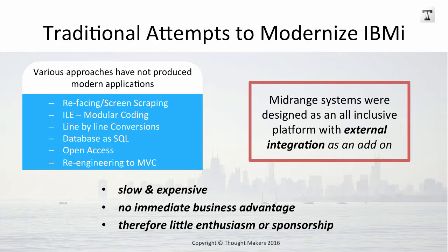If we look at traditional attempts to modernize IBM i, most of them haven't worked — largely still sitting in a monolithic architecture. Some of the attempts include refacing or screen scraping, modular coding using IBM's proprietary integrated language environment, and when IBM balked at the thought of building an object-oriented version of its procedural language RPG around 1998, line-by-line conversions were tried — taking a large spaghetti system and turning it into a large spaghetti system in a modern language. The latest craze is to modernize the database to SQL and expose it to stored procedures, which came around about 2000 and in the IBM i space is seen as the latest and greatest.